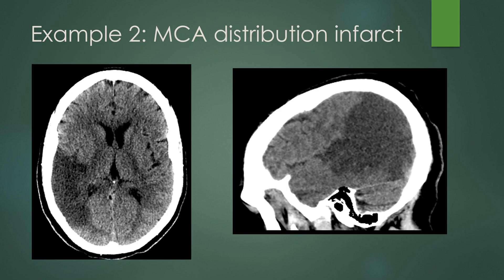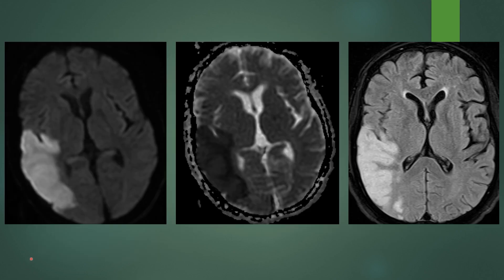Example two is an MCA distribution infarct. On CT, you see low attenuation with loss of gray-white differentiation involving the temporal lobe, part of the parietal lobe, as well as extending into the posterior aspect of the insular cortex. On MRI, you have abnormal restricted diffusion in these same areas — predominantly the temporal lobe and posterior insula — with dark ADC signal and hyperintense FLAIR signal compatible with vasogenic edema.